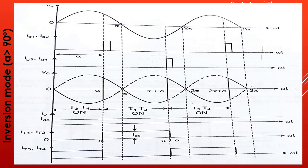Here we have triggered thyristors T1 and T2 at 120 degrees, which is greater than 90 degrees. The thyristors conduct from alpha to pi plus alpha. At pi plus alpha, that is 300 degrees, we trigger thyristors T3 and T4, and the output is due to the conduction of T3 and T4, then again T1 and T2, and it goes on like this.